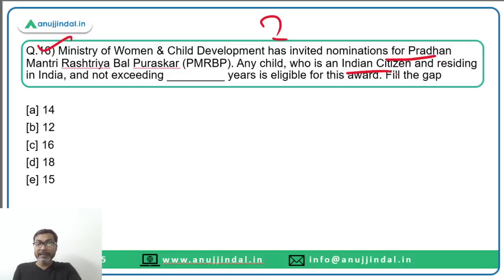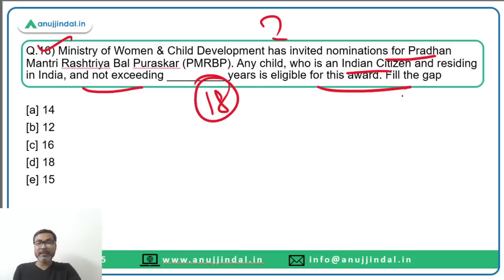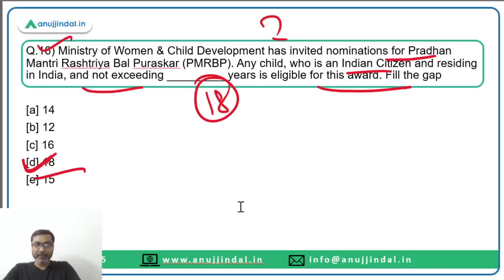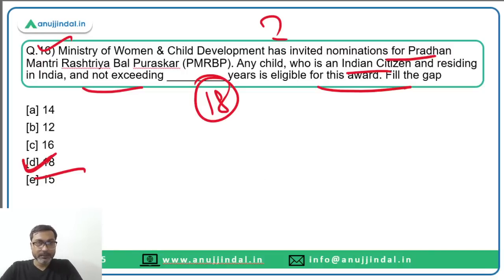Question sixteen: The Ministry of Women and Child Development has invited nominations for Pradhan Mantri Rashtriya Bal Puraskar. Any child who is an Indian citizen residing in India and not exceeding 18 years of age is eligible for this award. The correct answer is option D, 18 years.